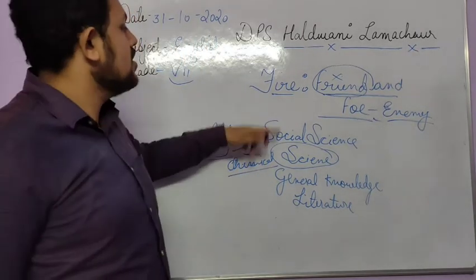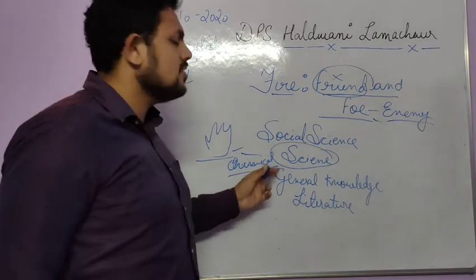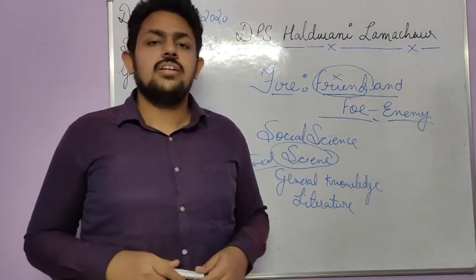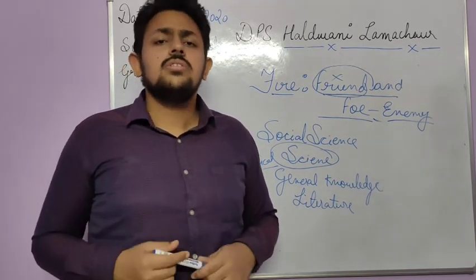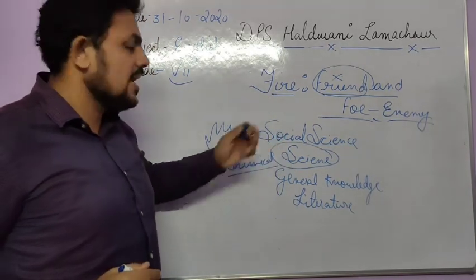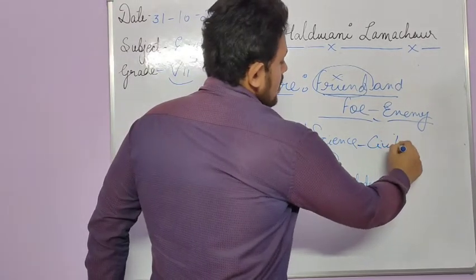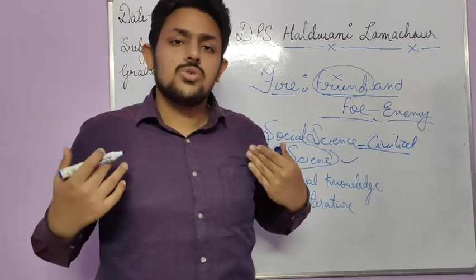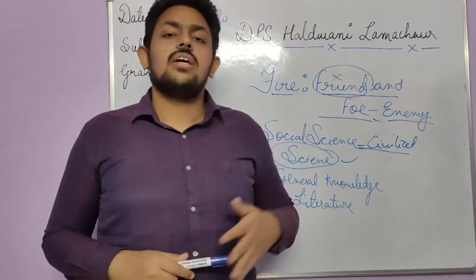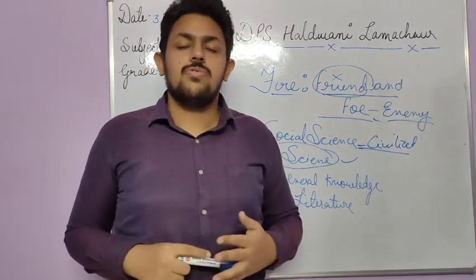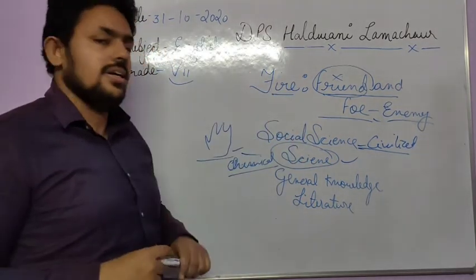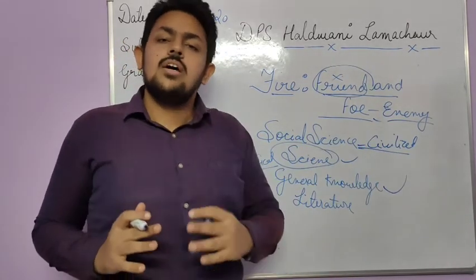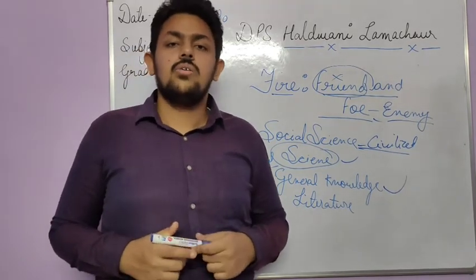Fire is also related to social science because when fire was not known, early humans used to eat raw food and were scared of animals. With the invention of fire, man became a social animal — early humans became civilized. So it is a phenomenon of social science also. General knowledge is covered too because this is something all of us should know. And anything that we read, write, or speak comes under the category of literature.